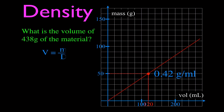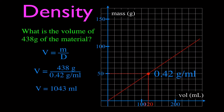We can go the other way around also. What is the volume of 438 grams? Well, 438 isn't on my graph — it's outside — and I want to know the volume, given the mass. It's the same material, so I'll use the same density of 0.42 grams per milliliter. The volume equals 438 grams divided by 0.42 grams per milliliter, and the volume would be 1,043 milliliters.